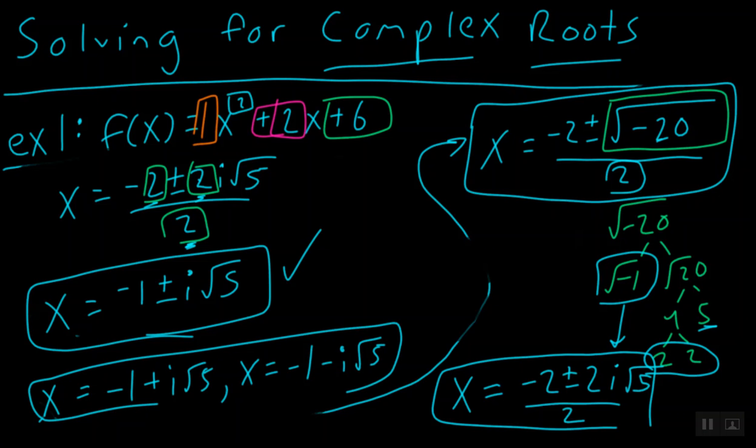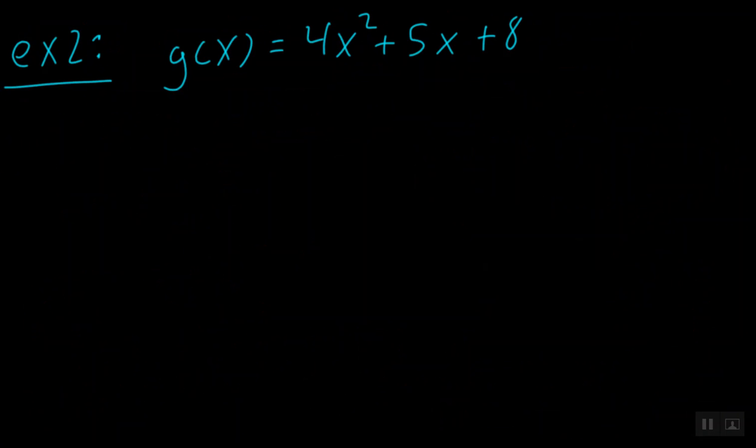Let's move on to our final example. Here we have example 2: g(x) equals 4x squared plus 5x plus 8. And let's go ahead and do some labeling. Here we have our a term, our b term, and our c term.